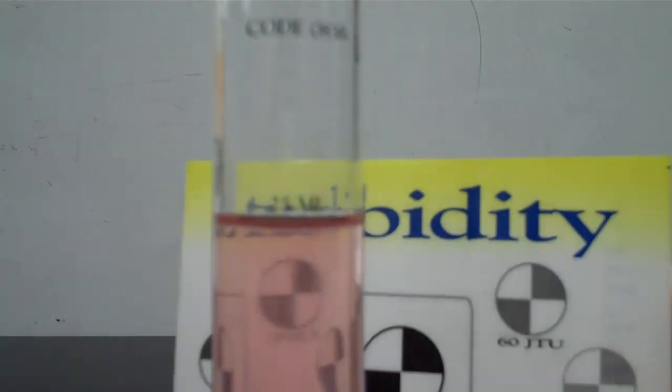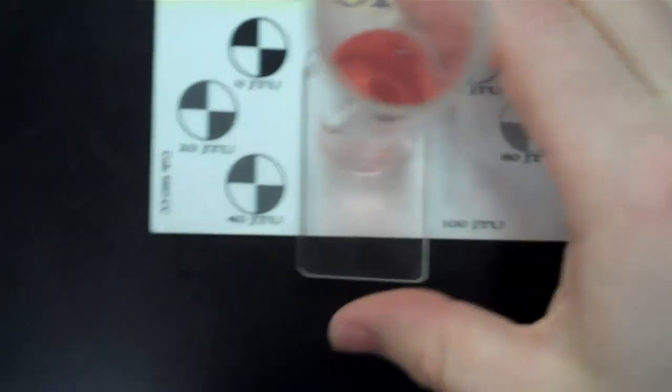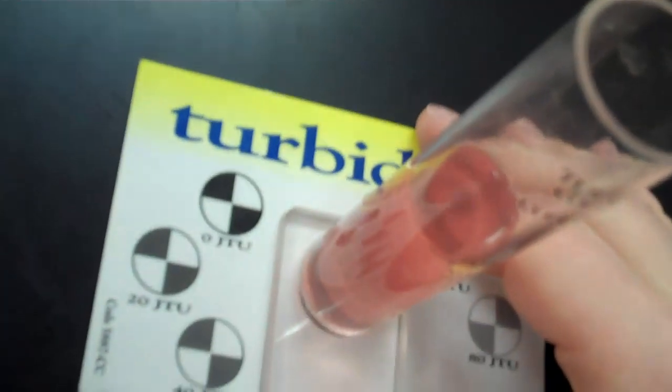Looking at it from the side, that's pretty close. The next step is you're going to need one of these turbidity cards and put that flat on the desk. Then you're going to line up—there is a gray rectangle.